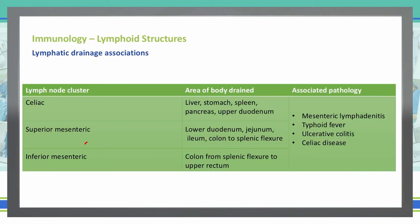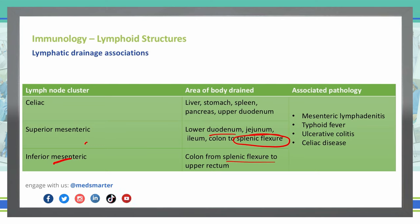The superior mesenteric drains the lower duodenum, jejunum, ileum, and the colon up to the splenic flexure — where the transverse colon becomes the descending colon in the left upper quadrant. Below that is the inferior mesenteric, which runs from the splenic flexure to the upper part of the rectum. Mesenteric lymphadenitis, typhoid fever, ulcerative colitis, and celiac disease can all be associated with these lymph node systems.